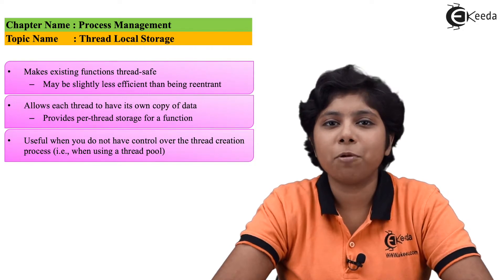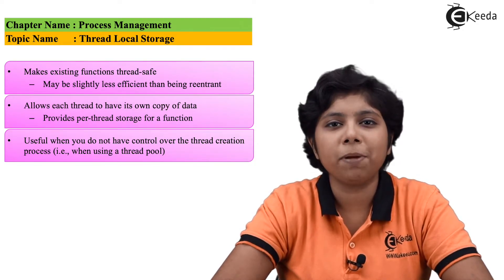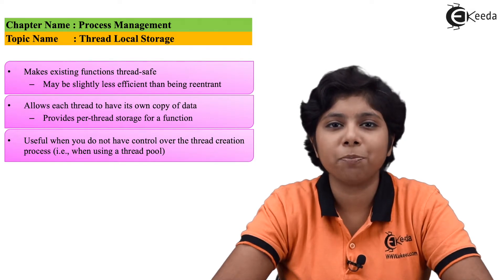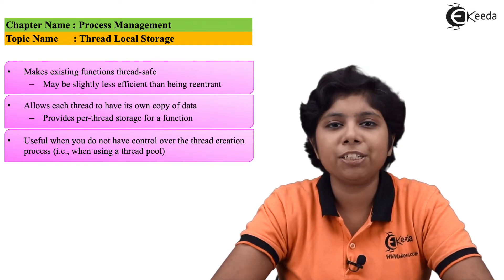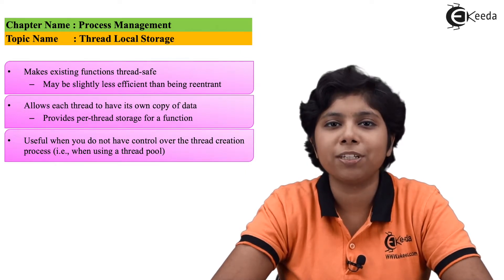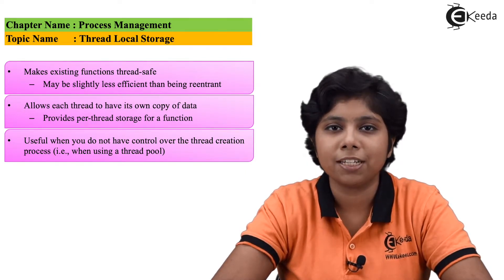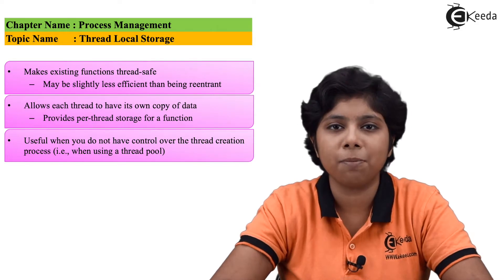Sharing data among threads in a process is one of the key benefits of multi-threaded programming. All threads that belong to the same process automatically share the data belonging to that process.